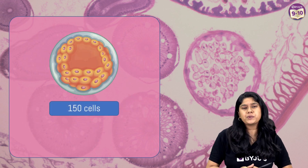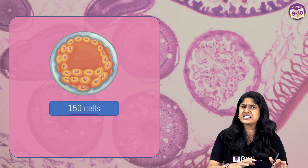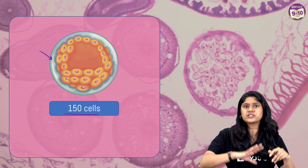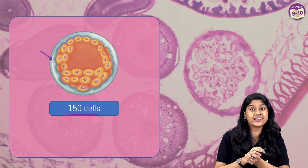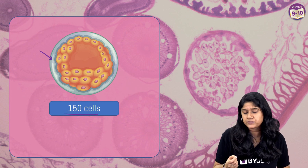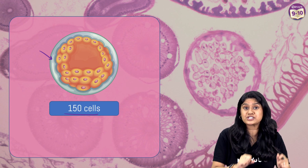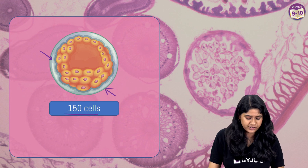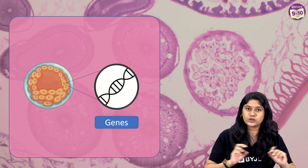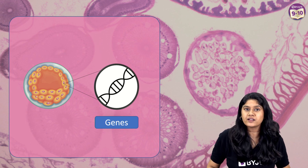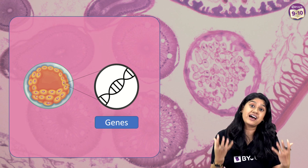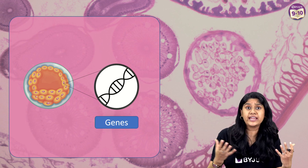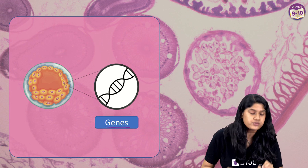Eventually it will reach a stage where it has approximately 150 cells. This particular stage is really very important. Up until here, everything is working smoothly — all the cells are alike and performing a similar function. But something happens at this particular stage that changes the game altogether. Some genes will be coming into the picture. Genes are nothing but a small fragment of our DNA that carries the genetic information — for example, hair color, skin color, height, etc. These genes are really very important.